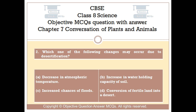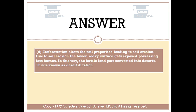Question number 2. Which one of the following changes may occur due to desertification? Option A, decrease in atmospheric temperature. Option B, increase in water holding capacity of soil. Option C, increased chances of floods. Option D, conversion of fertile land into a desert. The right answer is option D. Deforestation alters the soil properties leading to soil erosion. Due to soil erosion, the lower rocky surface gets exposed, possessing less humus. In this way, the fertile land gets converted into deserts. This is known as desertification.